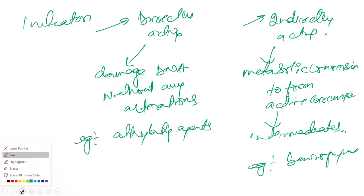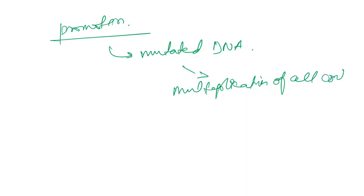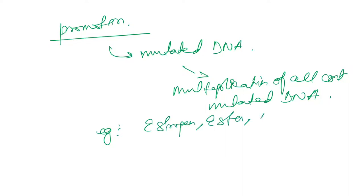Now we will talk about promoters. Promoters cause multiplication of cells containing mutated DNA. Examples of promoters are estrogen and asbestos — asbestos has already come in exams, so you have to remember this. Promoters help in the multiplication of cells containing mutated DNA, essentially promoting cancer.